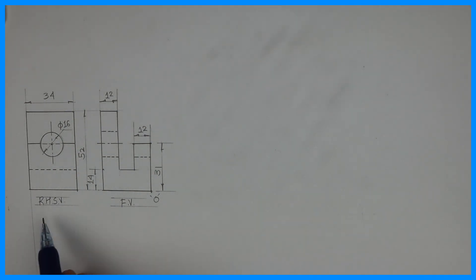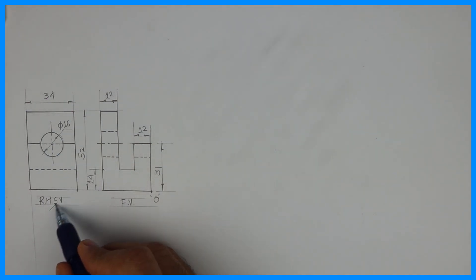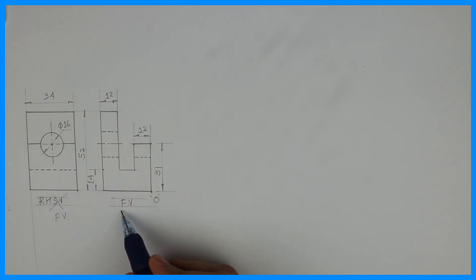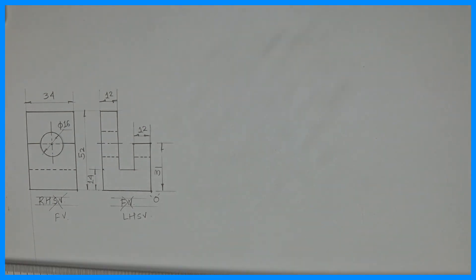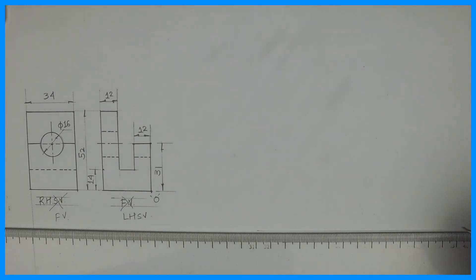So what we need to do, see front view and right hand side view, right? So we need to interchange this. So your right hand side view will become front view and your front view will become side view. Origin will come on the left hand side in front view because it's a first angle.